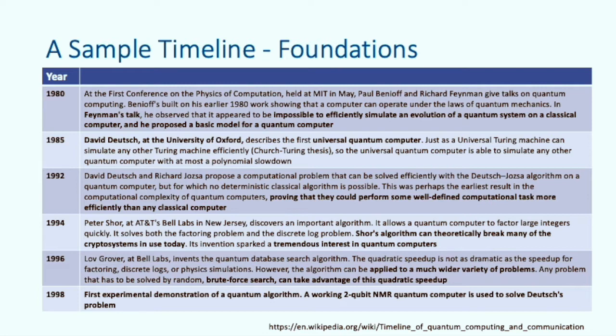In 1980 Richard Feynman observed that it appeared to be impossible to efficiently simulate an evolution of a quantum system on a classical computer and he proposed a basic model for a quantum computer. In 1985 David Deutsch at the University of Oxford describes the first universal quantum computer. In 1992 David Deutsch and Richard Jozsa proved that a quantum computer could solve some well-defined computational task more efficiently than any classical computer called the Deutsch-Jozsa algorithm.